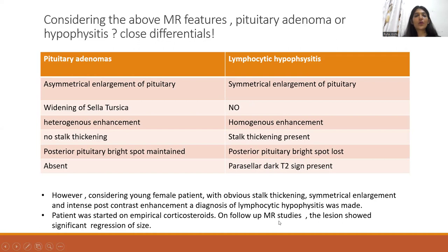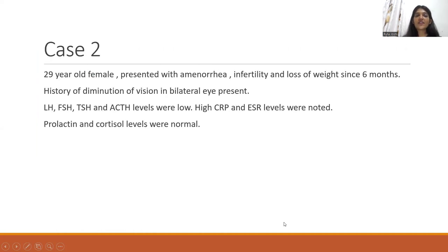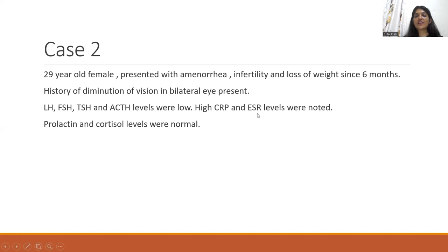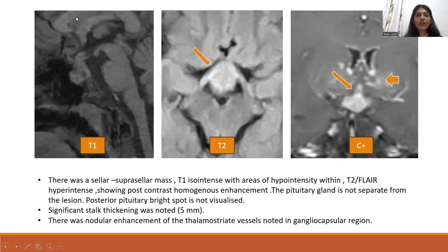The patient was started on steroids, and on follow-up MRI showed regression. Case 2 is a 29-year-old female presenting with amenorrhea, infertility, and loss of weight since 6 months. History of diminution of vision in bilateral eyes is present. Anterior pituitary hormones are low. High CRP and ESR levels are noted. Prolactin and cortisol are normal. On T2 and T1 weighted images, there is a sellar mass with a hypo-intense nodule within, T2 hyper-intense, showing homogeneous enhancement with stalk thickening of approximately 5 mm on post-contrast.